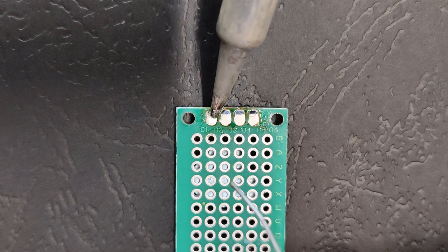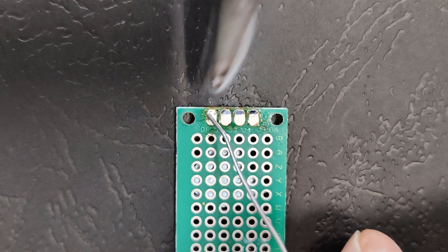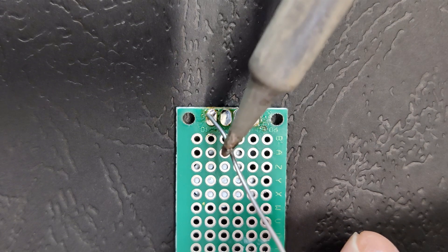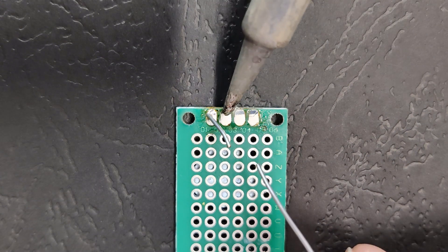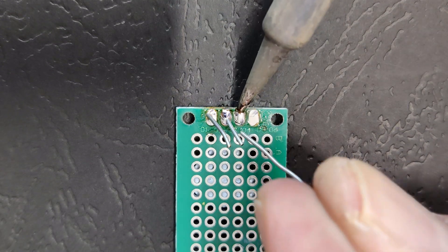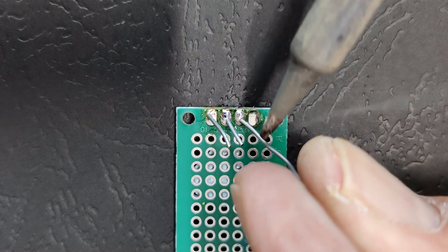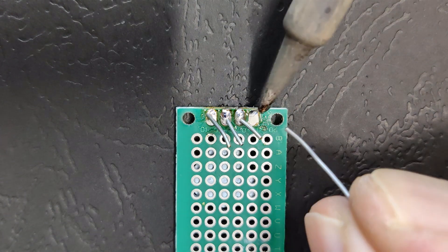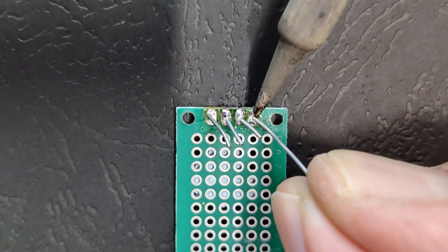Here's the technique again. Heat the pad first and feed the solder onto the pad, not the iron. As soon as the solder melts, remove the iron and keep feeding the solder onto the pad. The solder will quickly solidify and you can simply cut off the excess to the correct length with the iron.